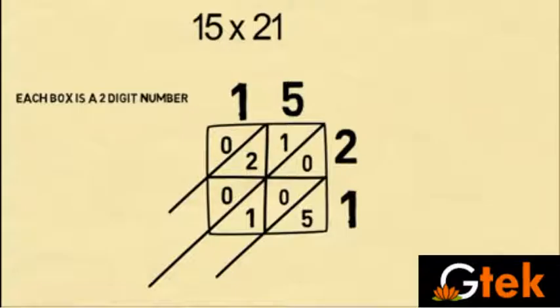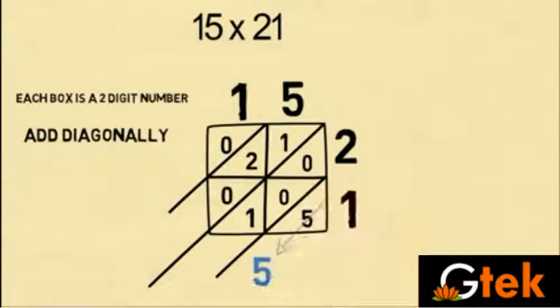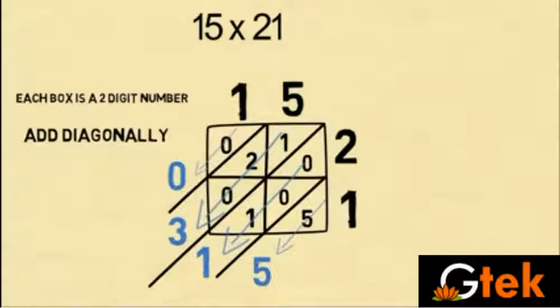Okay. Now what we have to do is that, so we have to add diagonally. So it is 5. So it is 1. It is 3. It is 0. So the answer is 3, 1, 5.